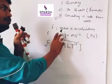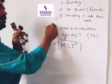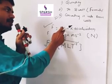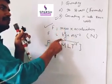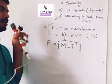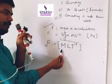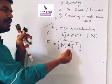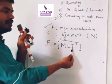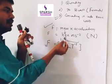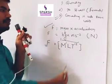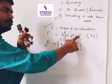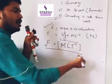Once again: write the formula of the quantity — force equals mass into acceleration. Write the basic units: mass has unit kg, acceleration has unit meter per second square. kg is replaced by M, meter by L, and second by T. kg has power 1 so M is power 1; meter has power 1 so L is power 1; second has power minus 2 so T is power minus 2. This is the dimensional formula of force.